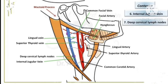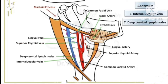Also present in the carotid triangle is the internal jugular vein. The tributaries draining into the internal jugular vein in this region are: the common facial vein, the lingual vein, and the superior thyroid vein. There are also deep cervical lymph nodes present alongside the internal jugular vein.